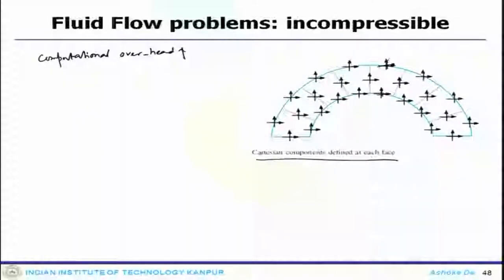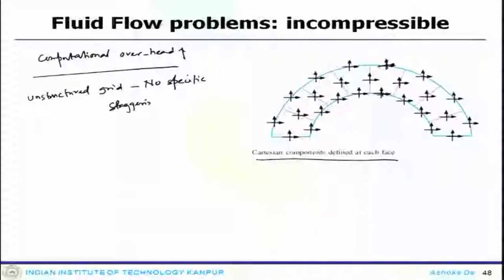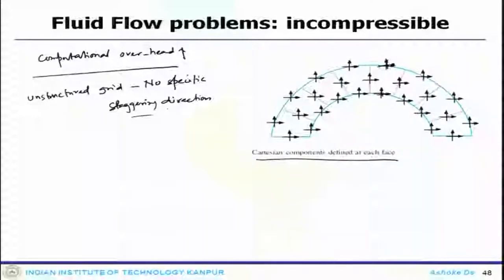The problem is further complicated in the case of an unstructured grid. In a regular Cartesian system this is manageable, but when you have an unstructured grid you can get more problems. In that case, the unstructured face has no specific staggering direction, which means the only way for the staggering concept to apply is by changing the size of the shell elements used for pressure and velocity components. Finally, the geometric information is also stored and more than doubled in such an arrangement, increasing the computational overhead significantly.